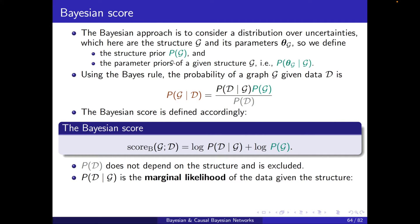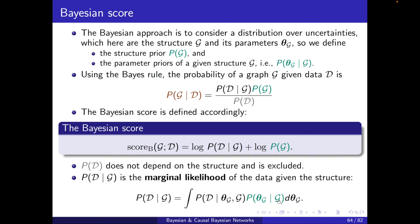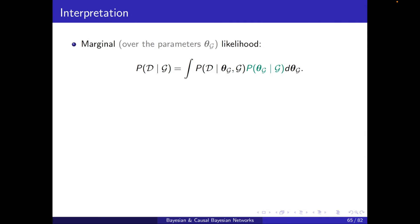p of g is clear — it's the structure prior. I can take it as uniform or put a higher probability on some structures. The other term is the marginal likelihood of the data given the structure. It's marginal because I'm marginalizing out the parameters theta g. Since g is already conditioned on, the multiplied term will be p of theta g conditioned on g.